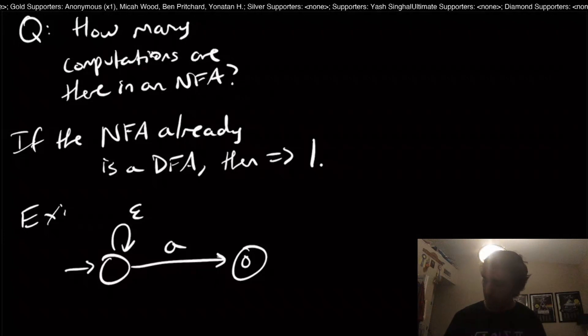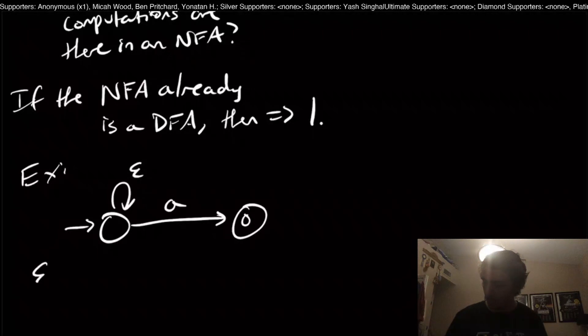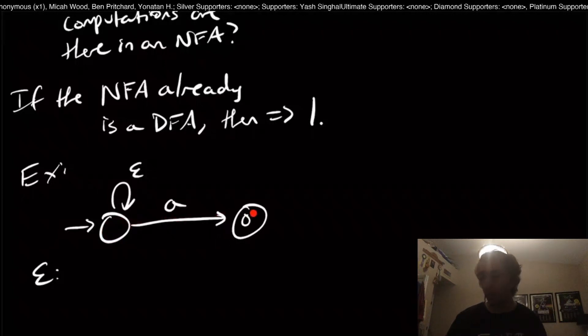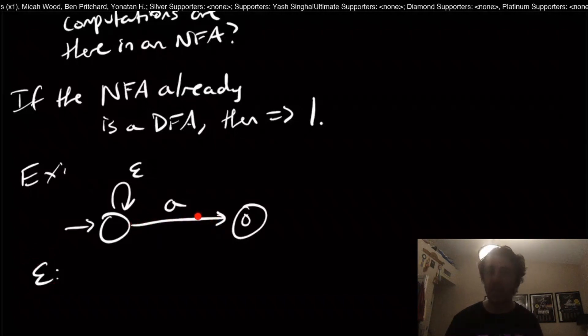Let's consider the string epsilon. If we just have the string epsilon, we're in this start state right here. We can't go over to this state if we're the empty string. Because if we took this transition, we would have to read a character to start with. So we're stuck here.